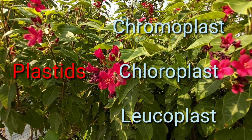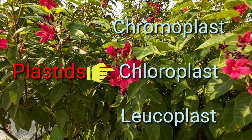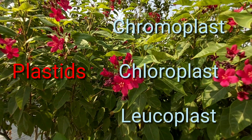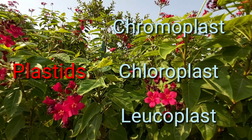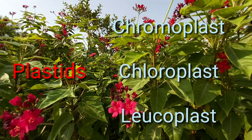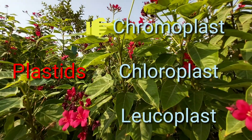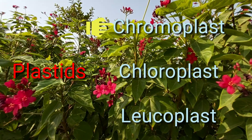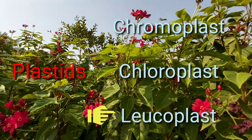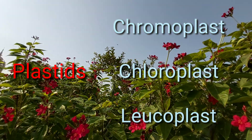Chloroplast is responsible for photosynthesis. Chromoplast gives color to fruits, flowers, and leaves. Leucoplast is the colorless type of plastid.